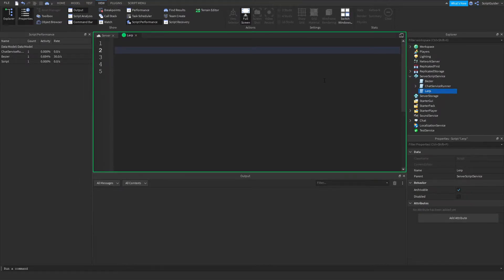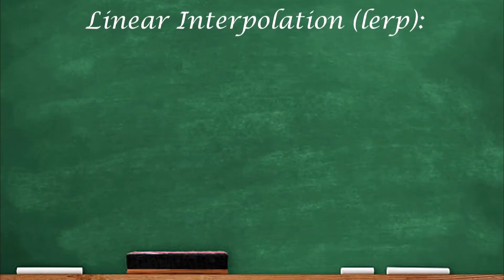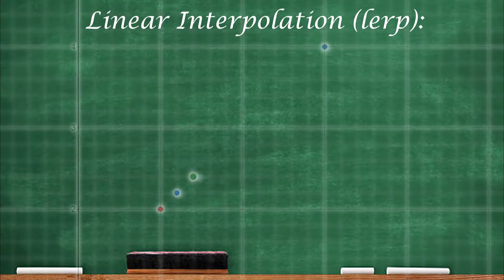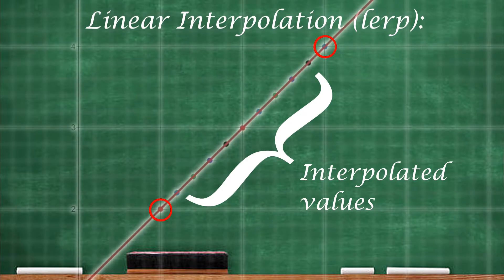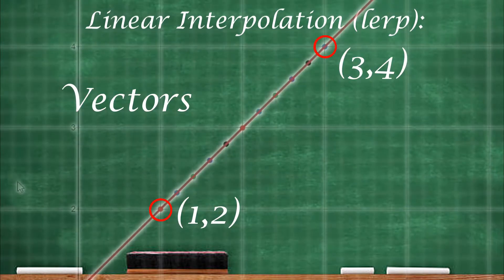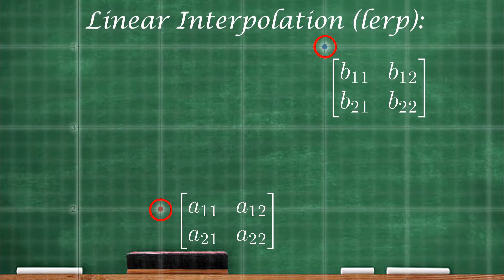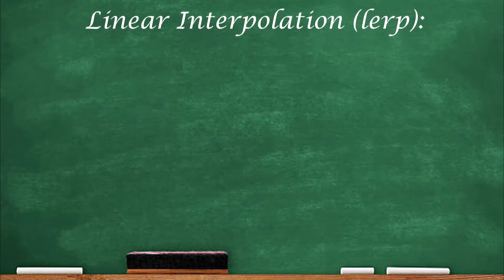We're going to start things off by talking about linear interpolation, also referred to as LERP, which you may or may not have come across before. All linear interpolation is, is just finding discrete values that lay on a line between two other values. And those values could be numbers, vectors, or really any mathematical object that contains numbers.